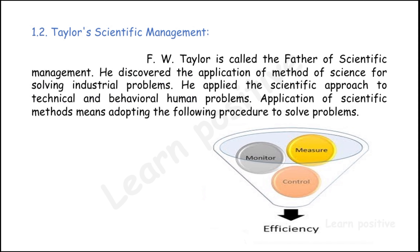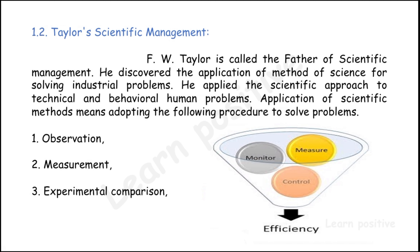By combining this technical approach and human behavior, he created procedures for solving problems in industry. The application of scientific management means adapting the following key procedures: first, observation — management should observe what is going on in the industry and what problems are occurring. Then they have to measure the positives and negatives, do experimental comparison, and formulate the positive findings as a procedure.